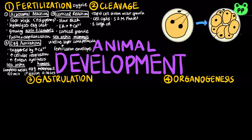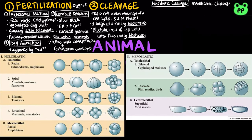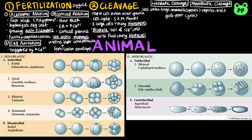Cleavage partitions the cytoplasm of one large cell into many smaller cells called blastomeres. The blastula is a ball of cells with a fluid-filled cavity called the blastocoel. There are two main types of cleavage: holoblastic cleavage, found in eggs with little or moderate amounts of yolk such as sea urchins, frogs, or mammals; and meroblastic cleavage, found in yolk-rich eggs such as reptiles and birds. Holoblastic cleavage involves complete division of the egg, whereas meroblastic cleavage involves incomplete division, due to the fact that yolk slows the completion of cytokinesis.